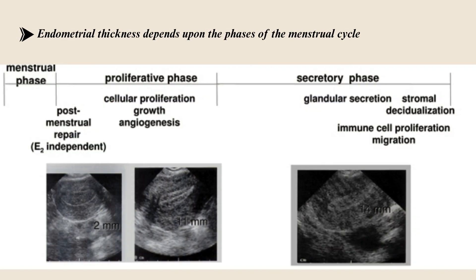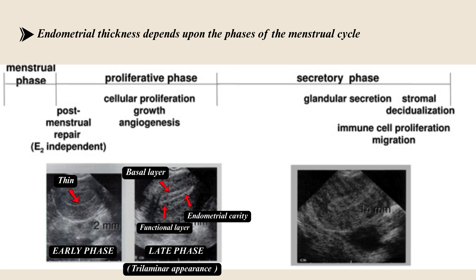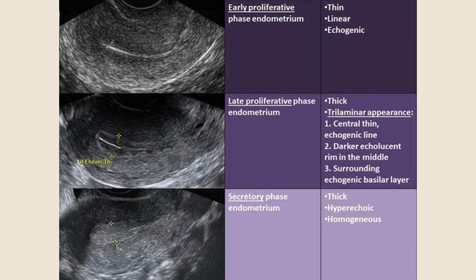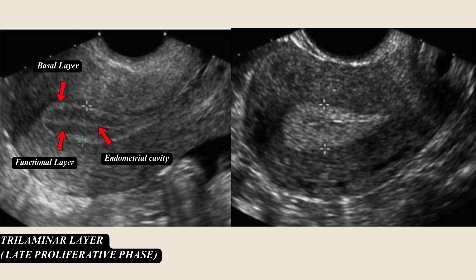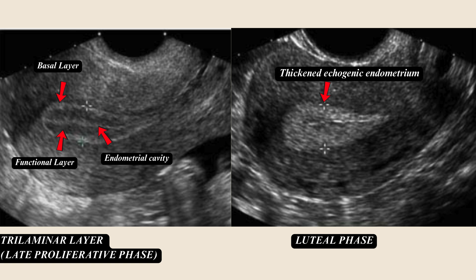Endometrial thickness depends upon the phase of the cycle. In the early proliferative phase, the endometrium is very thin. In the late proliferative phase or mid-cycle, we can see a trilaminar appearance of the endometrium showing the basal layer, the functional layer, and the endometrial cavity. In the secretory phase of the menstrual cycle, the endometrium becomes very echogenic. This image shows the same uterus — one side shows the trilaminar appearance indicating mid-cycle, and the other shows a thickened echogenic endometrium indicating the luteal phase.